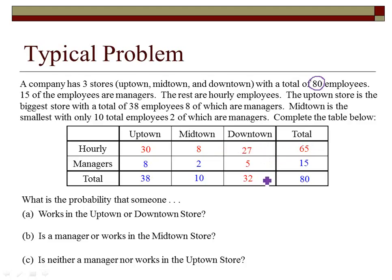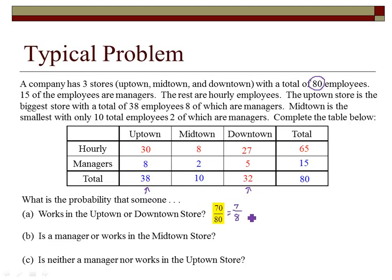Now that the table is filled out, the rest is just picking out what works. For the probability of working in the uptown or downtown stores: uptown has 38, downtown has 32, so I've got 70 out of 80. You can leave it as 70 over 80, reduce it to 7 eighths, or express it as the decimal 0.875 — but do carry it out to 3 decimal places.